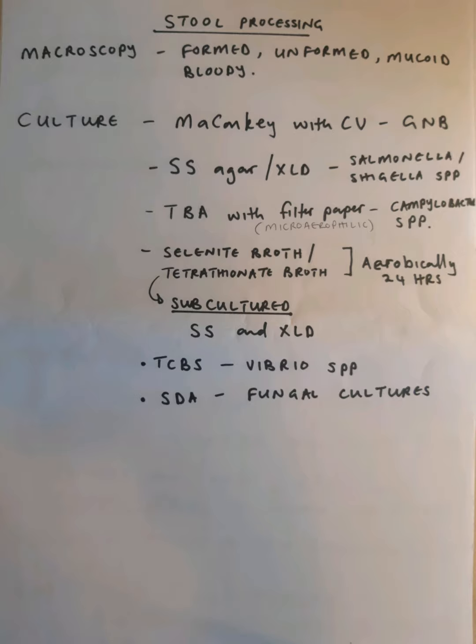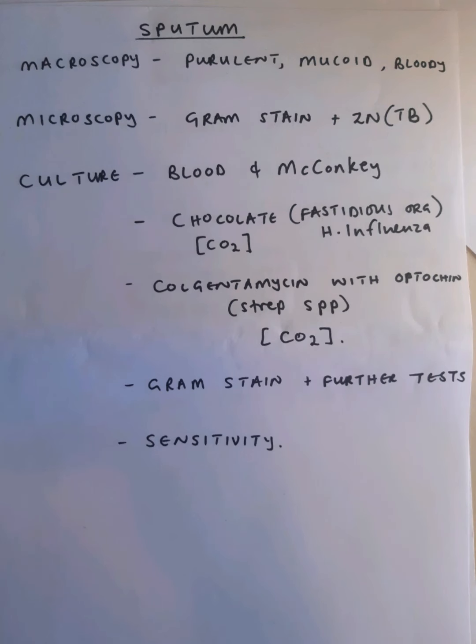For the processing of sputum, we start with macroscopy — how does it look? Is it purulent? Is it mucoid? Is it bloody? Then we do microscopy, where we do a gram stain or a ZN — the Ziehl-Neelsen stain — if TB is suspected.